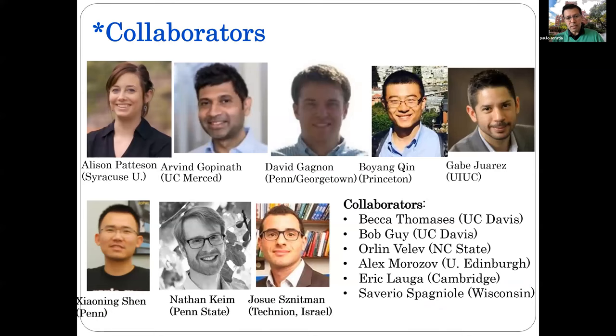Understanding how they do that is important to understand many biological functions we have, including reproduction, and even in the robotic side to create micromachines that swim through complex fluids. Because I never get to the end of my talks, here are my collaborators. These are the people that actually work on this project from Allison Patterson, now a professor at Syracuse, to Arvin, Kusa Merced, David, Boyang, Gabe Horace, Sheldon, Nathan, and Josue.